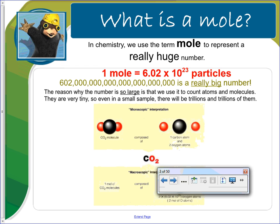In chemistry, we use the term mole to represent a really huge number, and that number is one mole is 6.02 times 10 to the 23rd particles. And it's a really big number, and it's really big because what we're using it for is to count atoms and molecules. And these are very small, so it's going to take a lot of them to get a good count on.